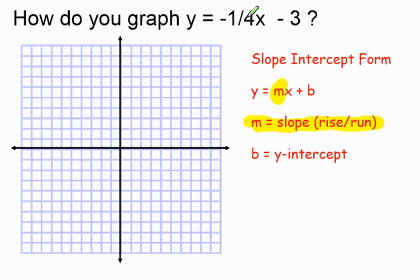So in this case, our m, our slope, is negative one-fourth. And our y-intercept in the b position is going to be negative three. Because I'm subtracting three, it's negative three.